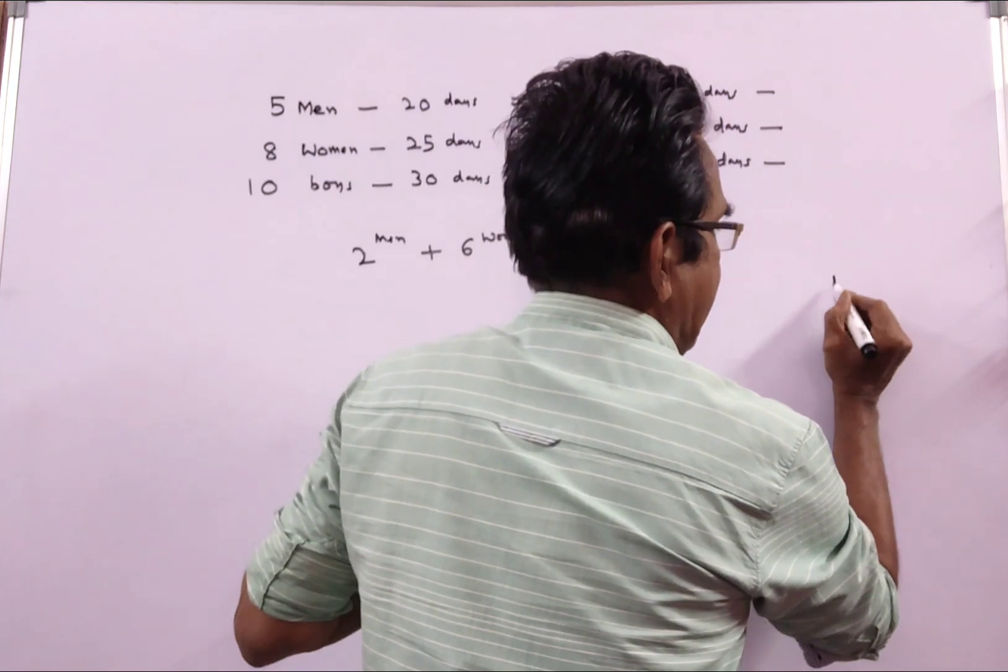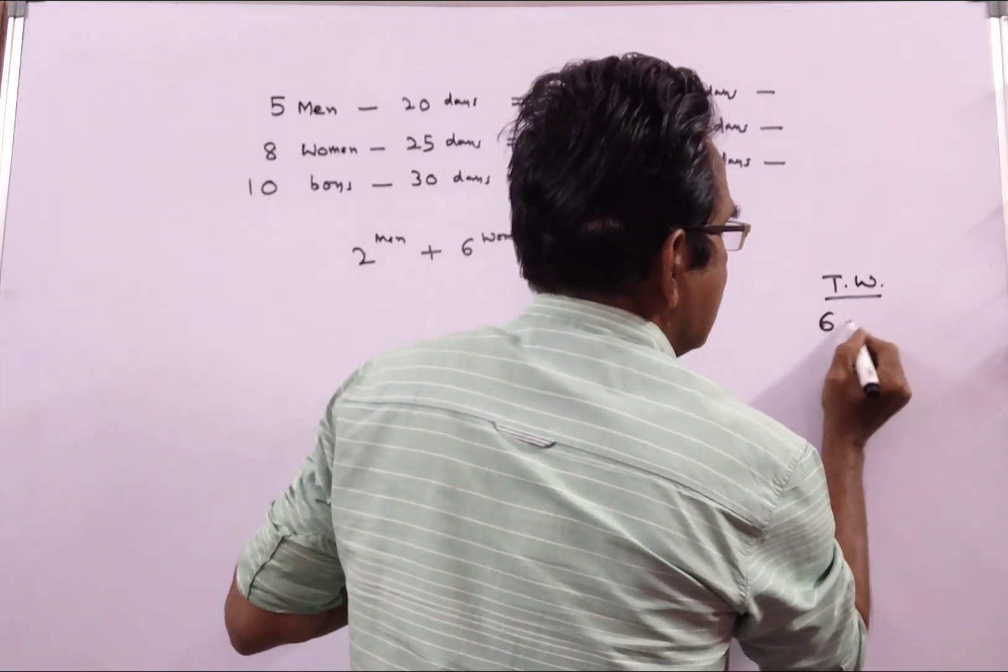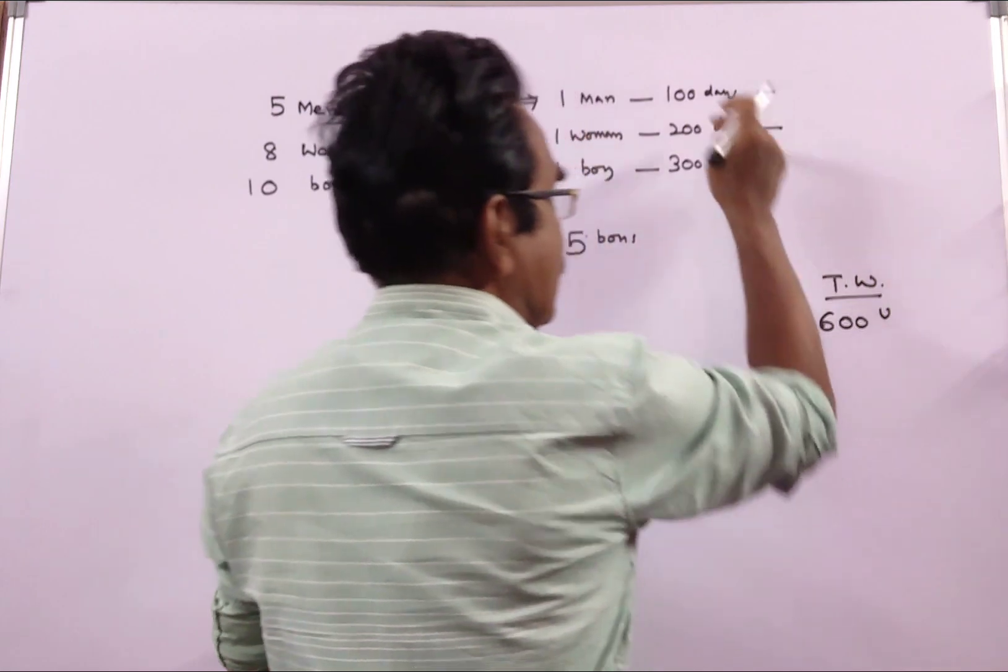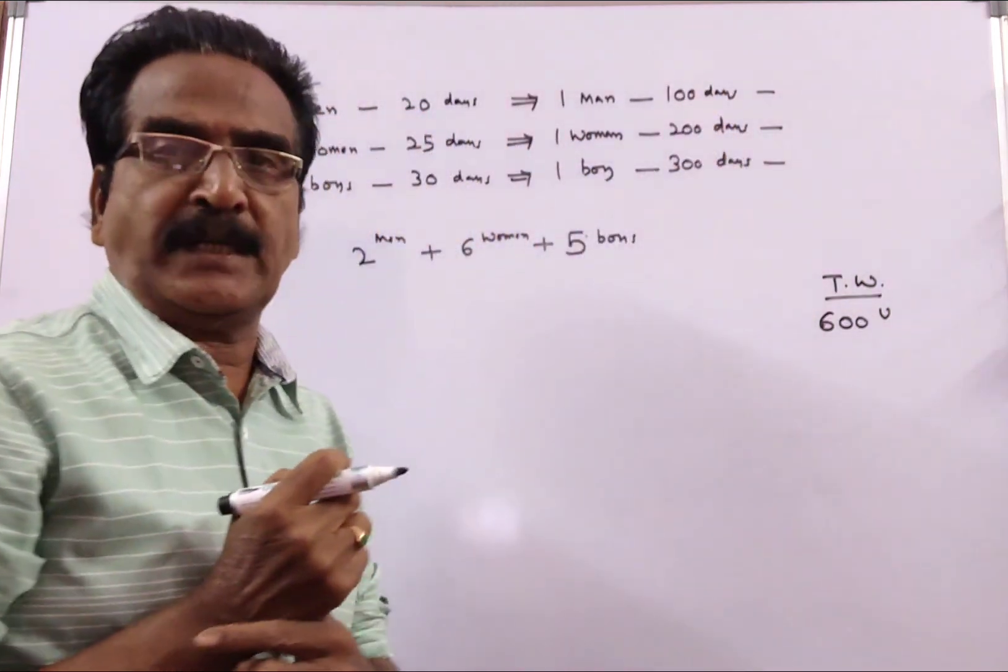Friends, the total work, say 600 units, that is the LCM of 100, 200 and 300.